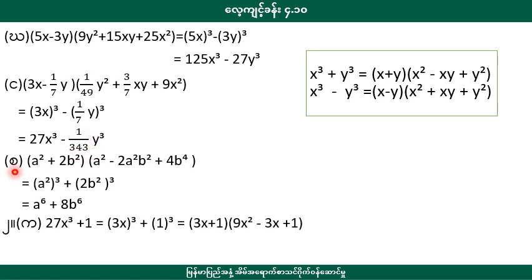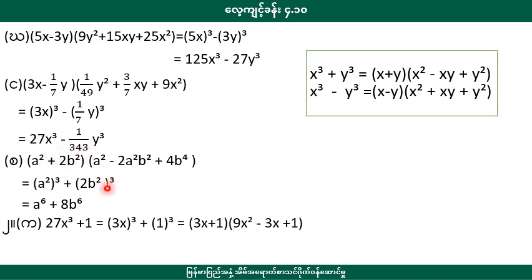So then, we have a squared plus 2b squared. a squared minus 2a squared b squared plus 4b to the power of 4. We can write a squared and write 2b squared.